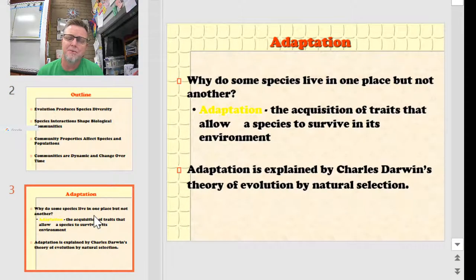All of this starts with the answer to a very simple question that I will pose to you: Why do some species live in one place but not another? Realistically, the answer to that question is all centered around the idea of adaptation. At the end of the day, an adaptation is a trait that allows a species to survive in the environment. If you're lucky and you're born with advantageous adaptations, then you'll be successful in the environment that you're in. If you're not born with advantageous adaptations, there's really three options.